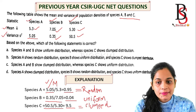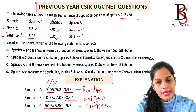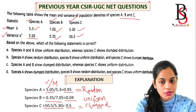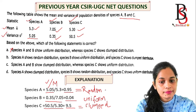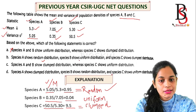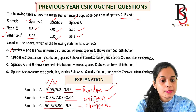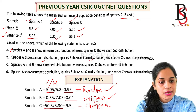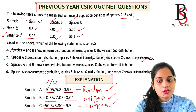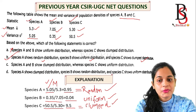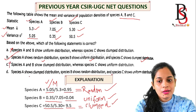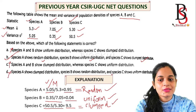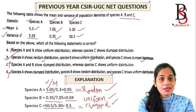Looking at the options: Option A — species A and B show uniform distribution — is wrong. Option B — species A shows random distribution, species B shows uniform distribution, and species C shows clumped distribution — is correct. Options C and D are incorrect. So the correct answer is option B.